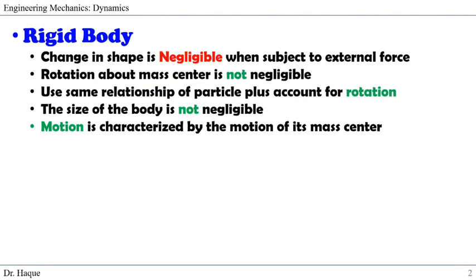A rigid body is a body that assumes the change in shape is negligible when subject to external force. The rotation about the mass center is not negligible, and the size of the body also cannot be neglected. The motion is characterized by the motion of its mass center.